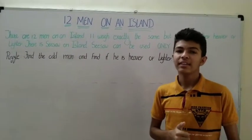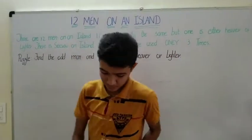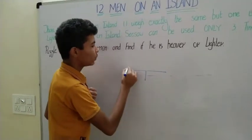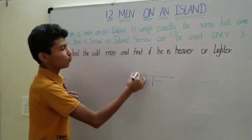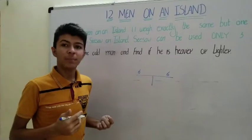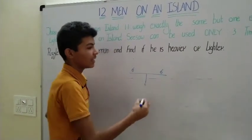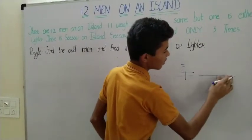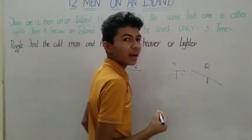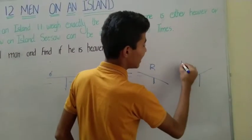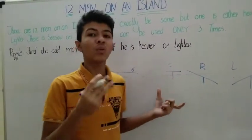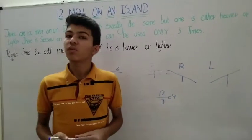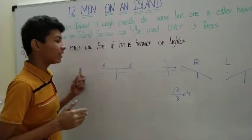I highly recommend you pause this video and get a solution by yourself. Now let's move to the solution. If you place six and six on a seesaw, that would not be an optimized solution, because there are three possible outcomes: balanced, seesaw moves right, or seesaw moves left. Since there are three possible outcomes, we divide 12 by 3 to get 4, so we must work with groups of 4.